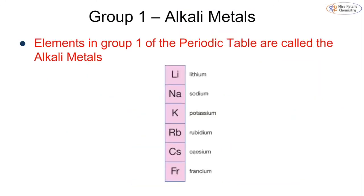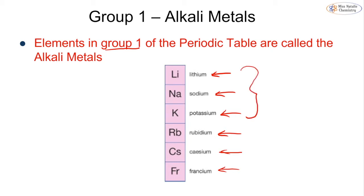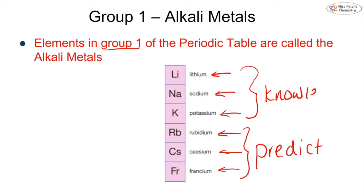The alkali metals are group one of the periodic table and they are lithium, sodium, potassium, rubidium, cesium, and francium. In an exam it is likely you could be asked about lithium, sodium, and potassium in terms of their chemistry. For rubidium, cesium, and francium, you will generally be asked to predict their properties, so these are the ones you may be asked to predict.